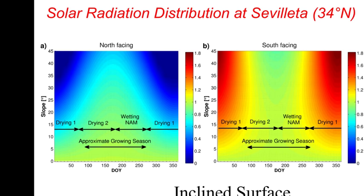The insolation difference between north-facing and south-facing slopes in the northern hemisphere is especially large in the winter season. During spring or summer, both north-facing and south-facing slopes receive roughly similar amounts of solar radiation.